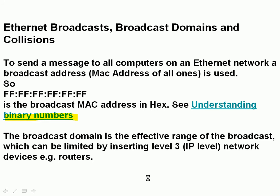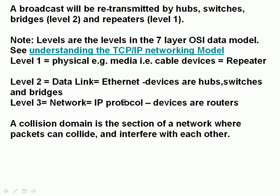What I want to look at is Ethernet broadcasts, broadcast domains, and collision domains. It's possible to send a message to all computers on an Ethernet network using a broadcast address, which is the MAC address set to all ones. The broadcast domain is the effective range of any broadcasts, and they're limited by inserting level 3 devices — routers — into the network. A broadcast will be retransmitted by hubs, switches, and bridges, which are all level 2 devices, and also by repeaters. Using these devices, we cannot split a network into separate broadcast domains — we need a router to do that.